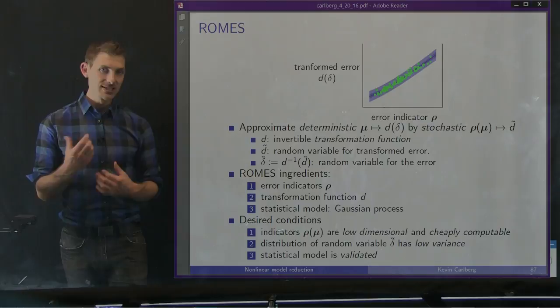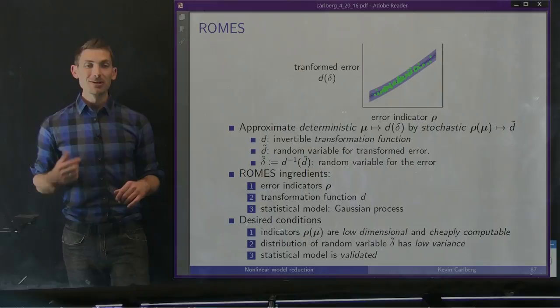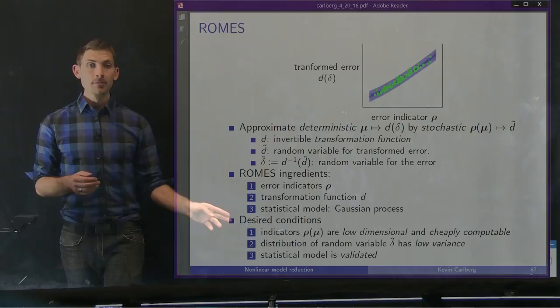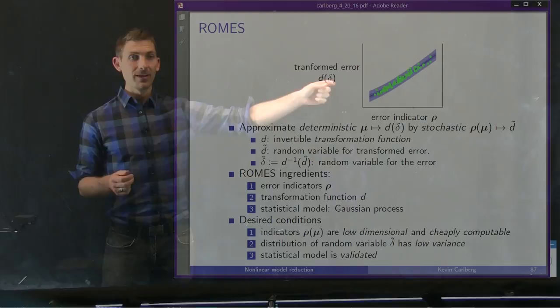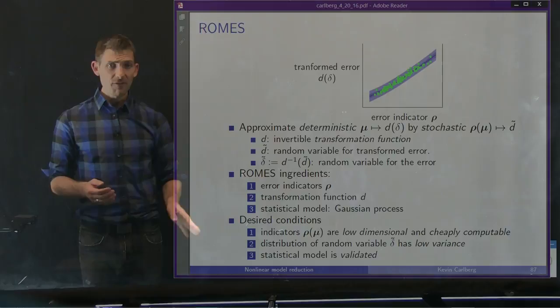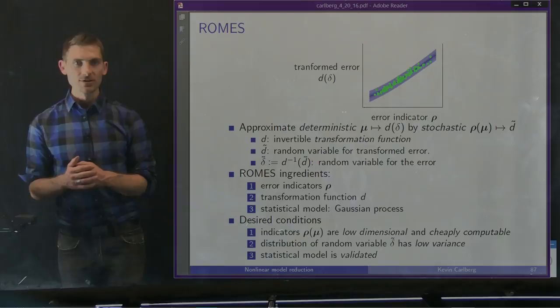The desired conditions guiding the choice of these ingredients are: first, we'd like our error indicators to be low-dimensional and cheaply computable — generated during the ROM simulation almost for free. Second, we'd like the distribution of the random variable to have low variance; a high-variance model means we don't really know our ROM error. Finally, we need to validate or cross-validate our statistical model, since fitting to data without cross-validation gives no assurance of model quality.